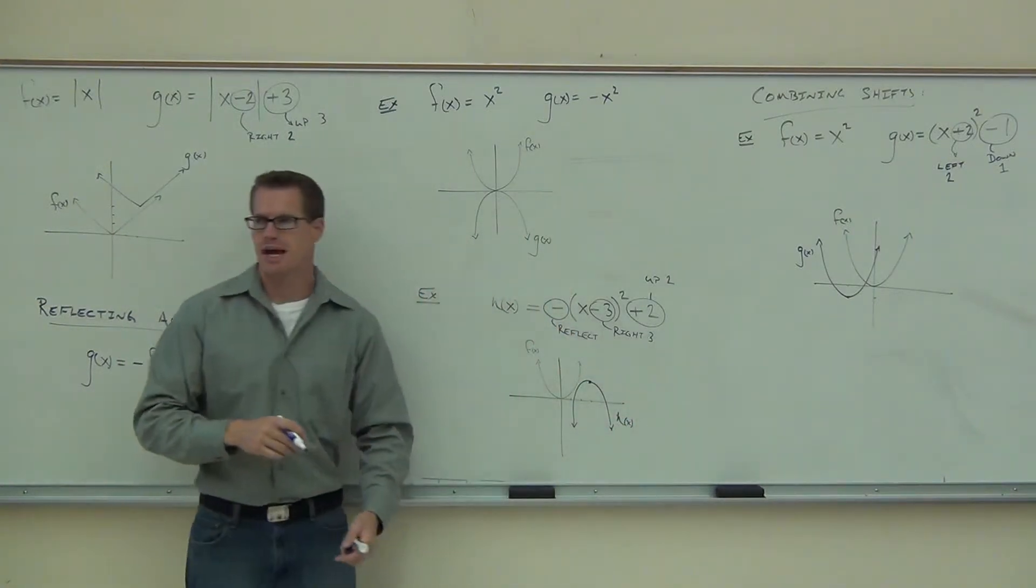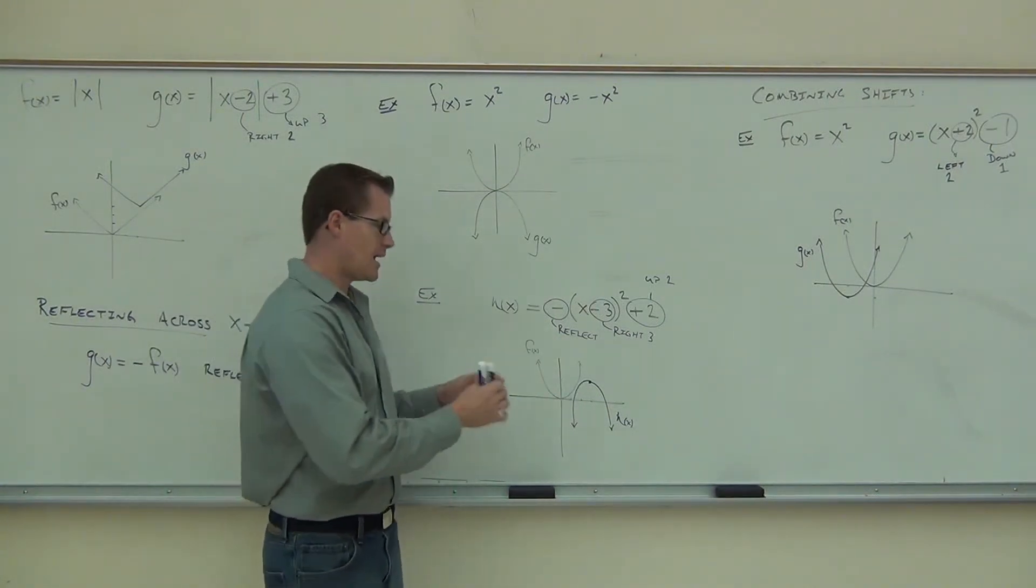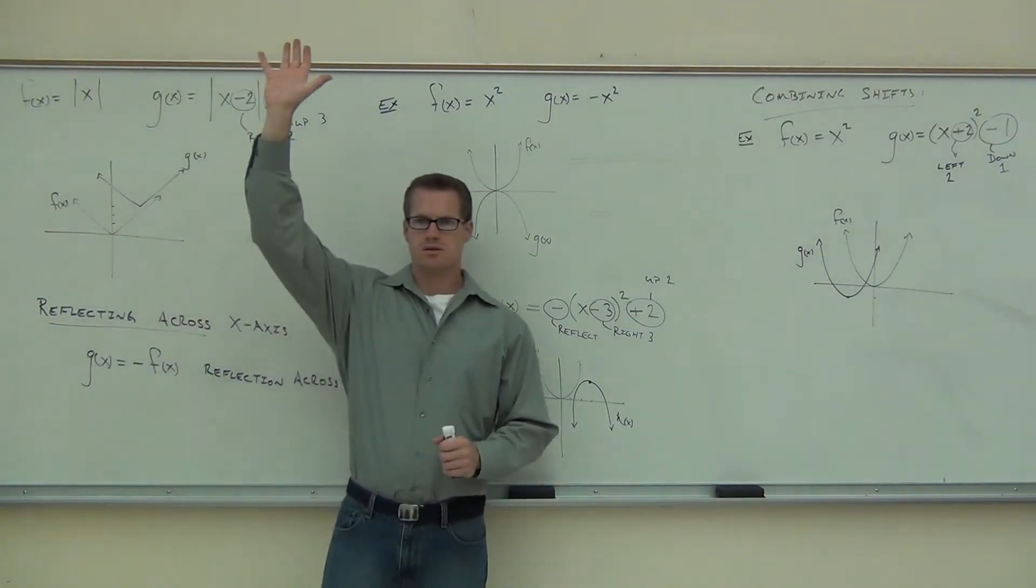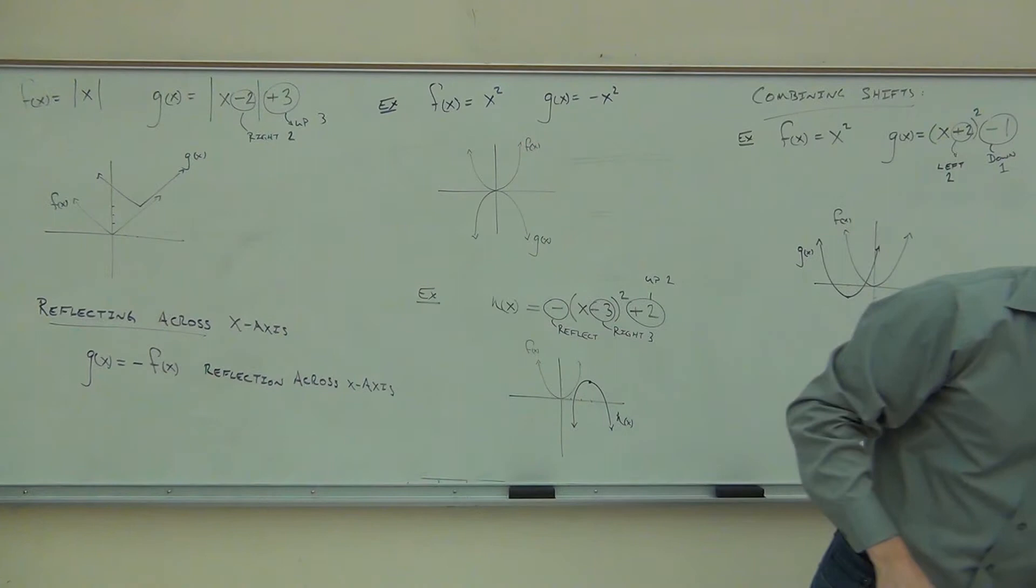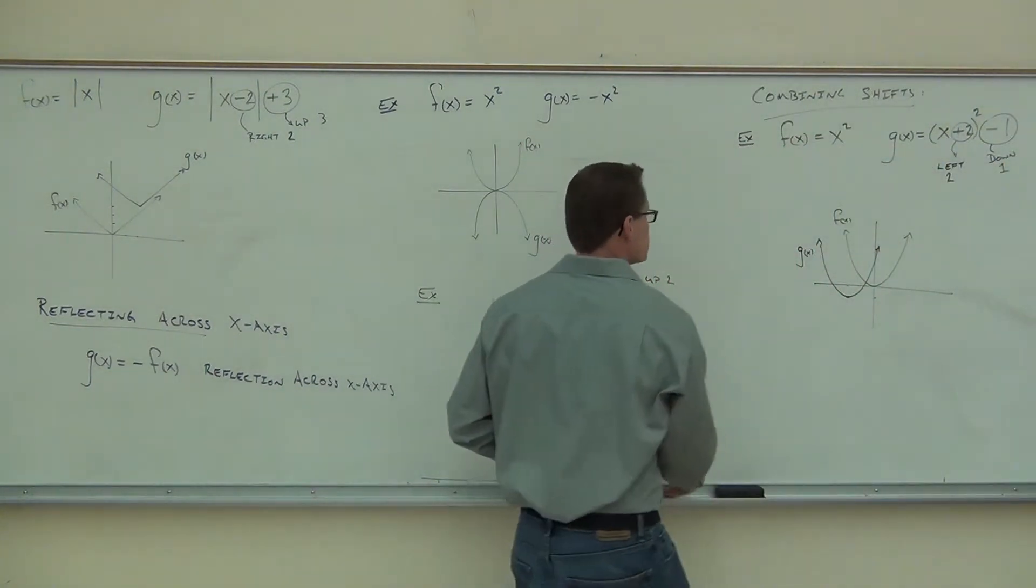And since I have two graphs, I have to label that h of x. It's probably a good idea to label it anyway, but you must if you have two graphs on that thing. Would you raise your hand and feel okay with this? Good for you. I'm going to give you two to try on your own. Let's work through these, and then we'll be done with our section.